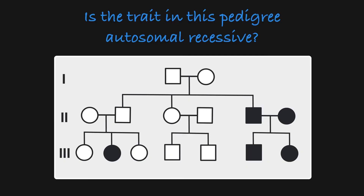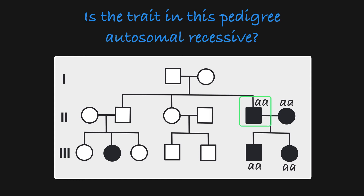With those two rules in mind, let's take a look at some practice pedigrees to see if we can tell if the trait is inherited in an autosomal recessive manner. When we look at this pedigree, the first thing that stands out is that this couple is both affected and have all affected children, which falls in line with the rules associated with autosomal recessive traits. If this man is homozygous recessive, then his parents must both carry the recessive allele, and since they are both unaffected, that means that they are heterozygous. So the rest of their children could be heterozygous or homozygous dominant.